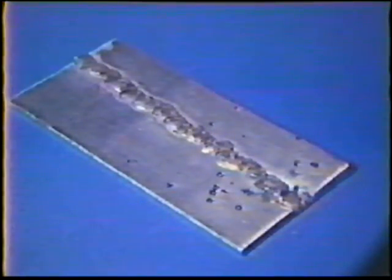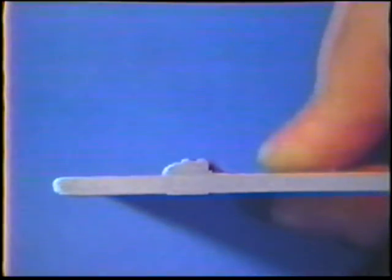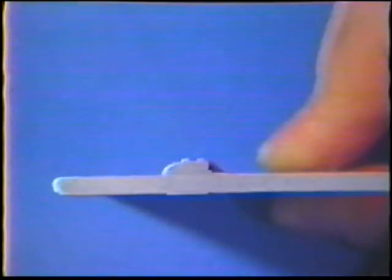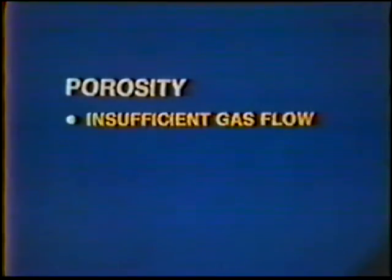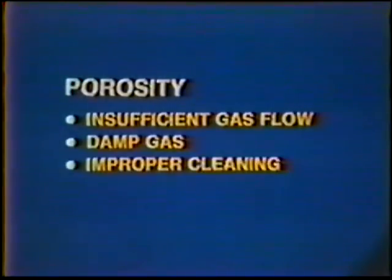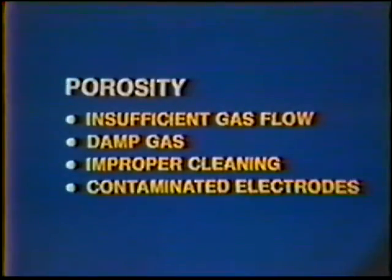Holding too long an arc length produces an excessively wide and flat bead face — the bead becomes irregular and dark with poor penetration. The dark color is primarily due to poor gas shielding of the molten weld metal. A dark weld with porosity can result from an insufficient gas flow rate, damp gas, improper cleaning of the base metal, or a contaminated electrode.